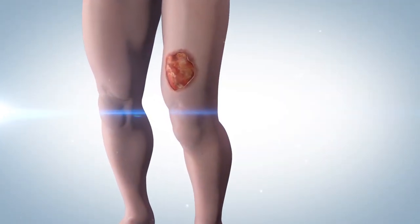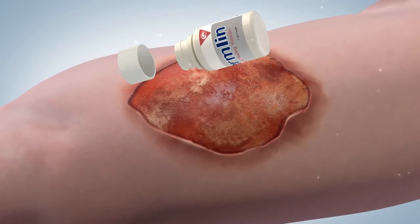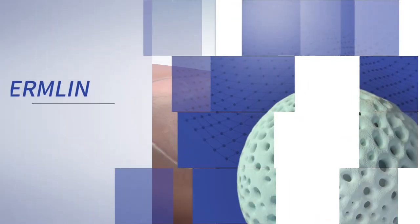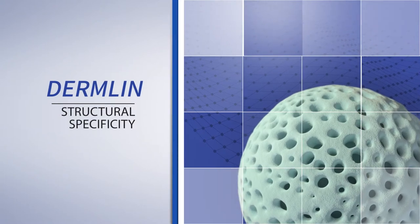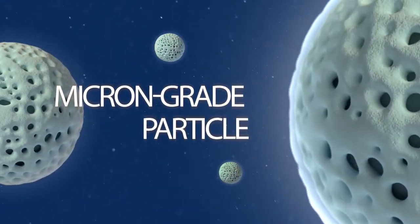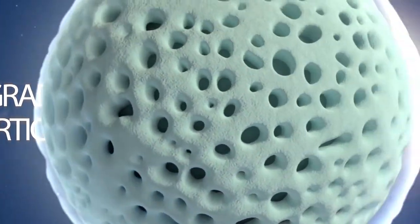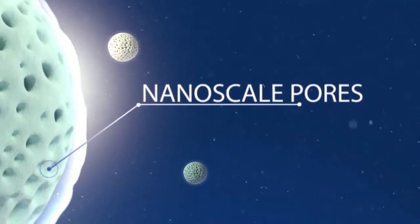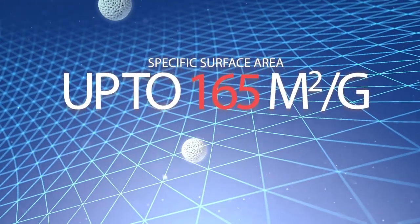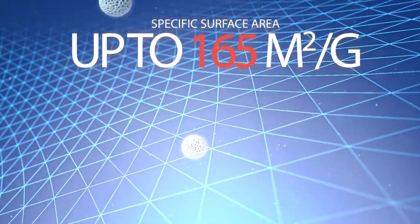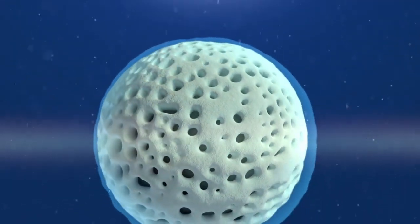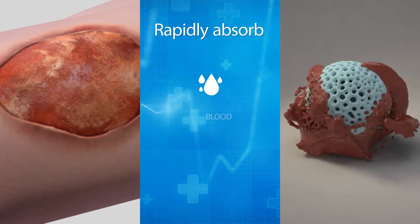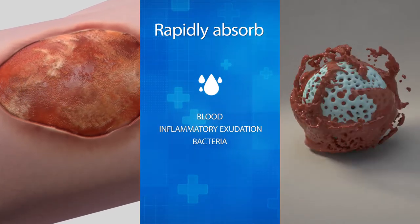Let's see what happens when Dermalyn contacts the wound surface. Dermalyn's active ingredients present as micron-grade particles, and these particles are full of nanoscale pores, which make the specific surface area up to 165 square meters per gram. This special spongy structure is helpful to rapidly absorb blood, inflammatory exudation, and bacteria.